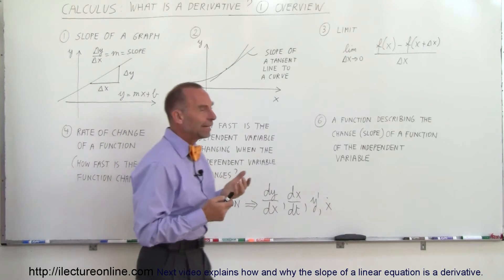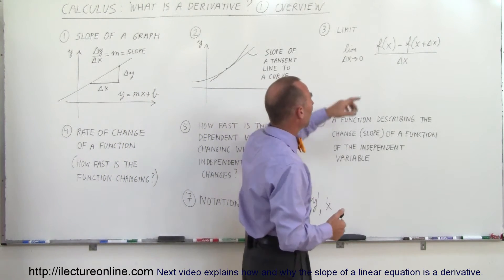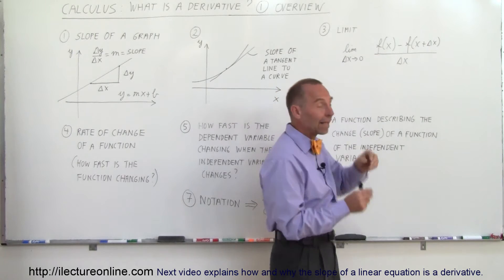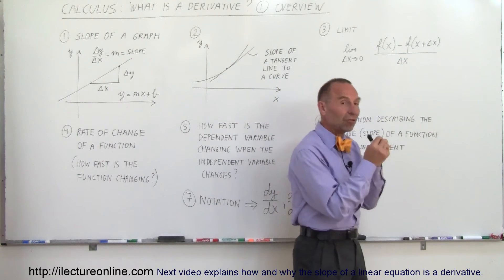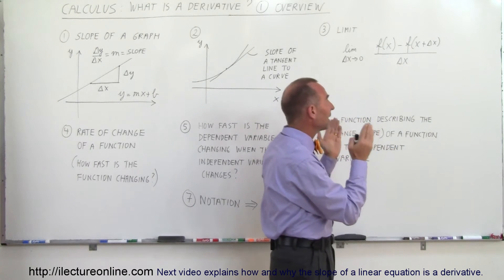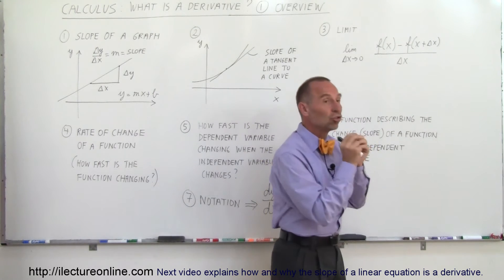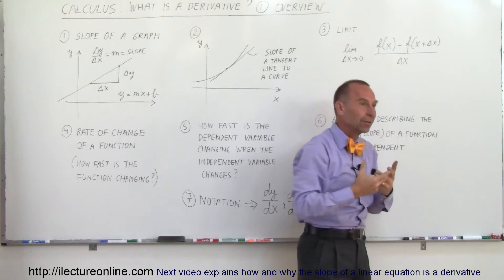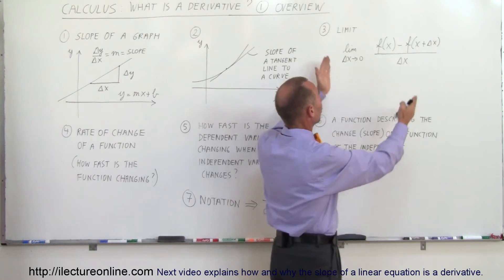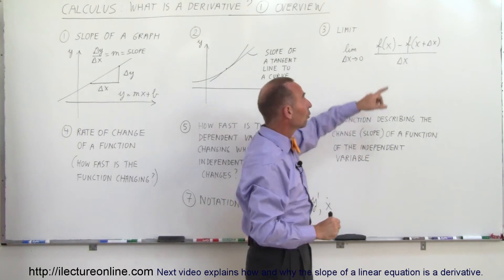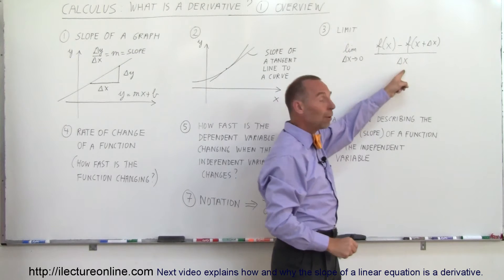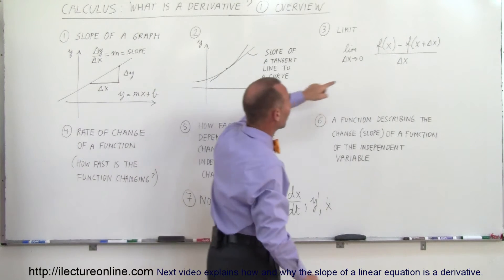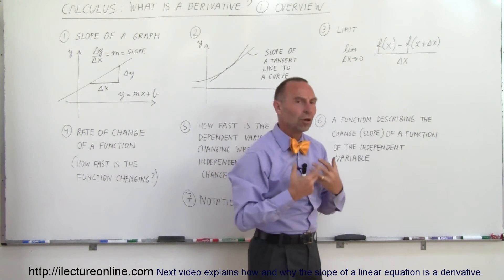Another way in which we can look at a derivative is using algebra and what we call the limit equation. The limit as delta x approaches zero is equal to the function evaluated at some point, then the function evaluated at a point a little bit further away, divided by the change in x — the change in the variable x. That is the derivative — the quintessential definition of what a derivative is. Notice that this represents the change in y, and that represents the change in x. So it's the ratio of the change in y divided by the change in x, and again that defines a derivative.